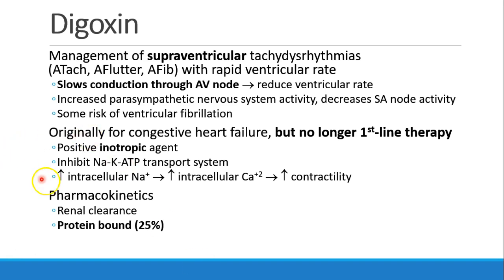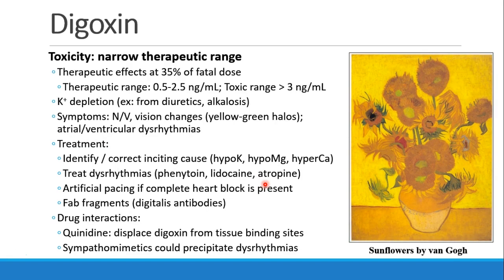The way digoxin works is by inhibiting the sodium-potassium ATP transport system in the heart, so you get increased intracellular sodium, which increases intracellular calcium, and thus increases contractility. Digoxin is renally cleared, and it's about 25% protein-bound.